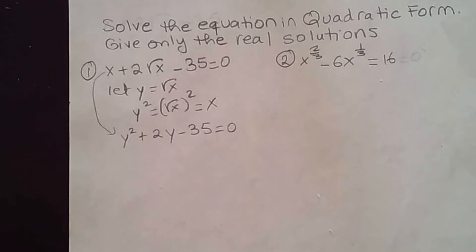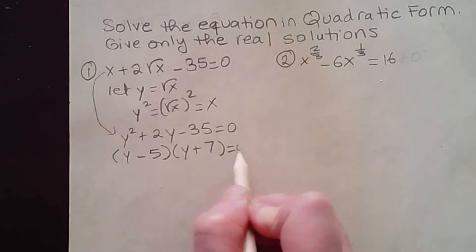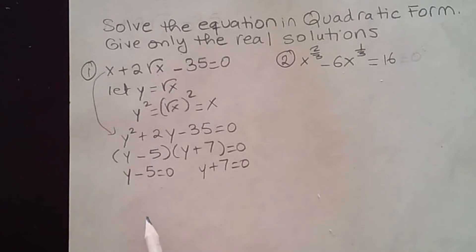So I can solve in terms of y at first. As you can notice, we can easily factor this one. This is y minus 5 times y plus 7 equal to 0. So negative 5 times 7 is negative 35. The middle term is negative 5 plus 7y, which is 2y. So now I can solve for y. Y minus 5 equal to 0 or y plus 7 equal to 0. So that means y equal to 5 or y equal to negative 7.